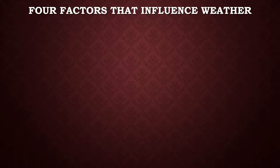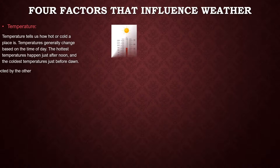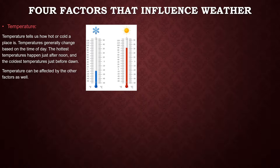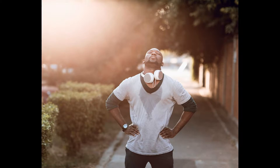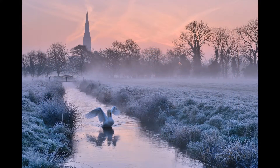Temperature refers to how hot or cold something is. In the case of weather, we are talking about how hot or cold the air is. Temperature is measured using an instrument called a thermometer and is calculated using either degrees Celsius or degrees Fahrenheit, depending on if you are using the metric or imperial system. Typically, the highest temperatures are likely to occur between noon and 2pm, and the lowest temperatures will occur just before dawn.